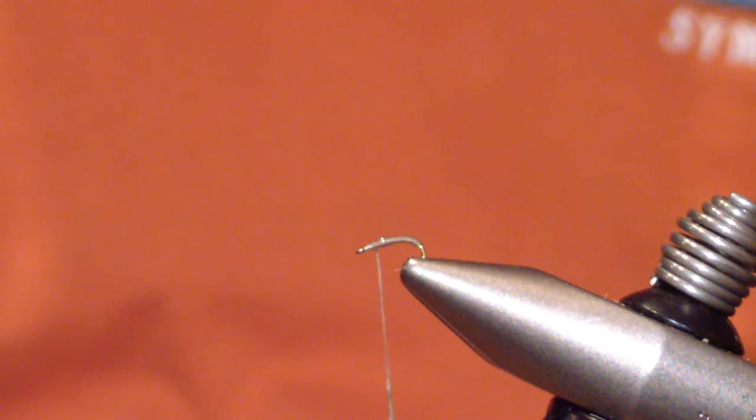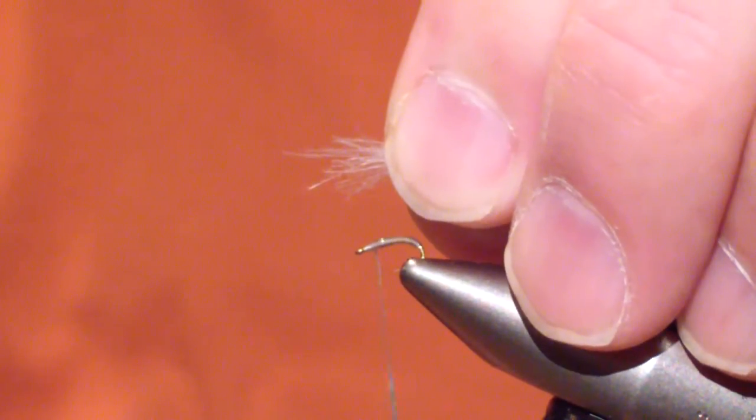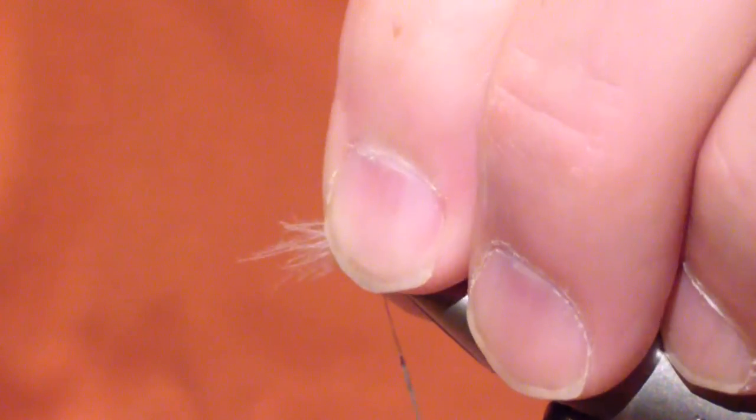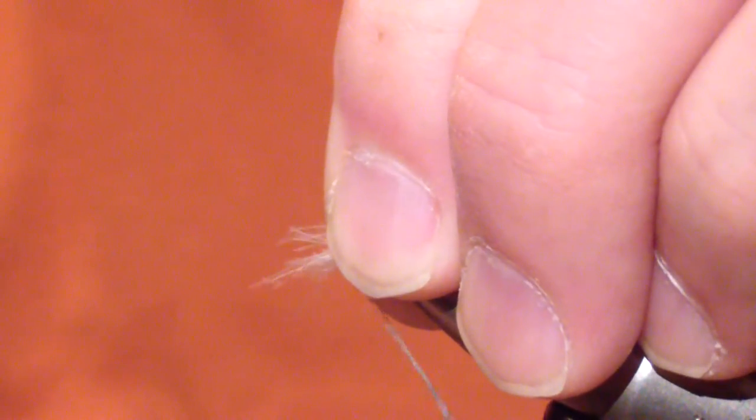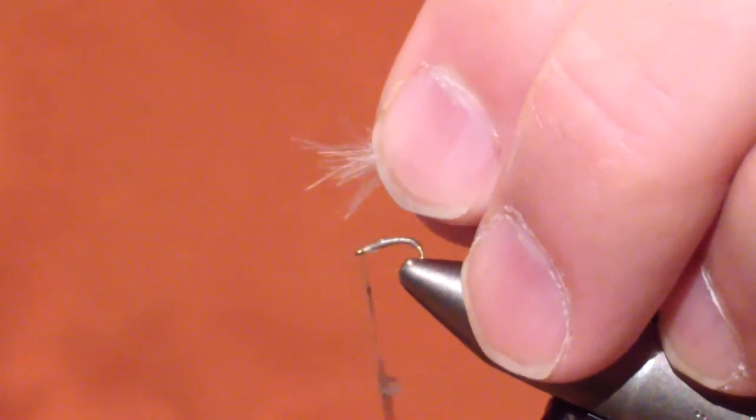Next, you're going to tie in Dun CDC. And you're going to tie it at the midway point of that gap you left. I'm going to roll on me.